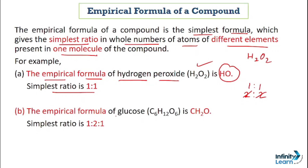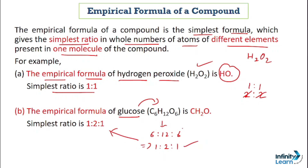Let's understand this more clearly with another example — the empirical formula of glucose. The chemical formula of glucose is C₆H₁₂O₆. Writing the ratio: 6, 12, and 6. Simplifying this — all three are divisible by 6 — gives us 1, 2, and 1. This is the simplest ratio, so the empirical formula of glucose is CH₂O.